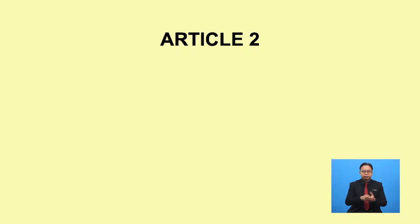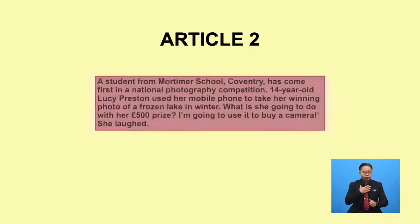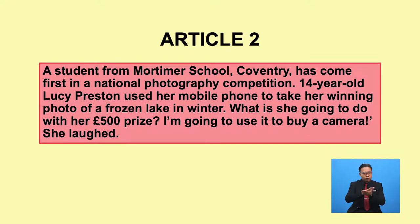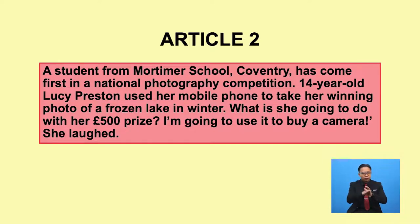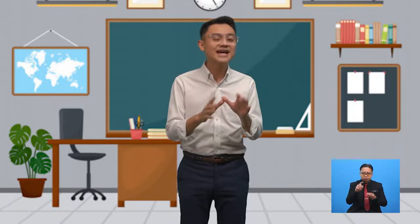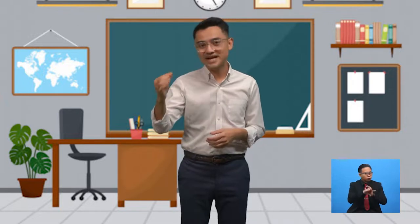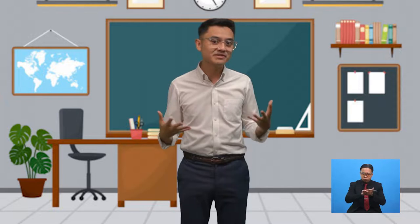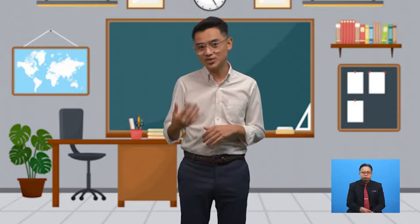Now, read the second text. A student from Mortimer School, Coventry, has come first in a national photography competition. 14-year-old Lucy Preston used her mobile phone to take her winning photo of a frozen lake in winter. What is she going to do with her £500 prize? 'I'm going to use it to buy a camera,' she laughed. This is a news report about a photography competition won by a school girl — what makes it incredible is that she only used her smartphone to take the picture.